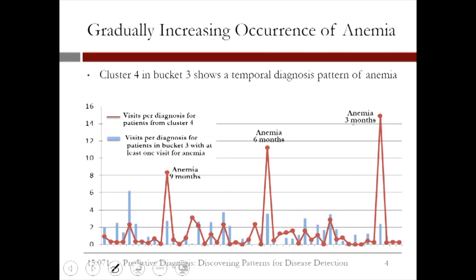The next pattern shows a gradually increasing occurrence of anemia. The red line shows patients in cluster 4 increasingly visiting the doctor for anemia from nine months before the event. Nine months before, members average 9 visits for anemia; this increases to an average of 11 visits six months before the event, and then an average of 15 visits three months before the event — a clear increasing pattern.